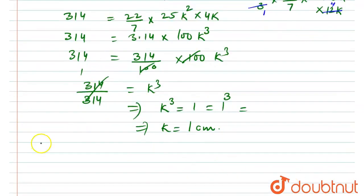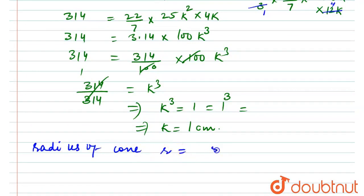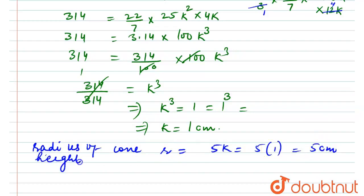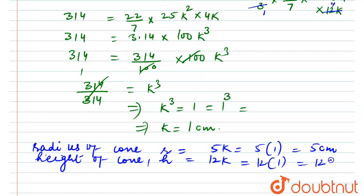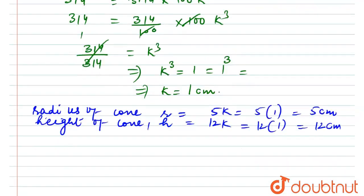So k = 1. Therefore, the radius of the cone = 5k = 5 × 1 = 5 cm, and the height of the cone = h = 12k = 12 × 1 = 12 cm.